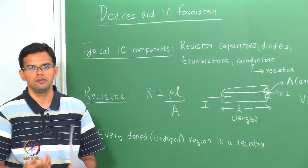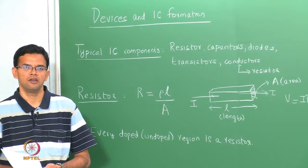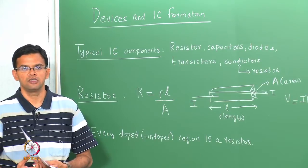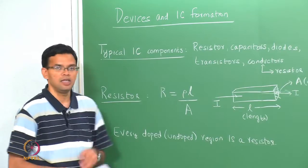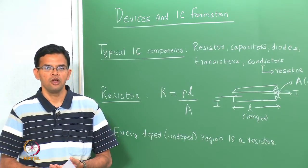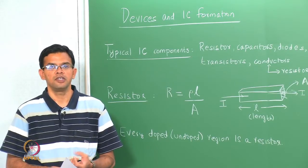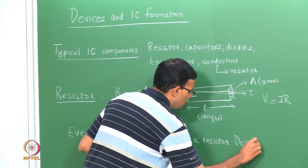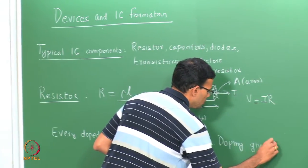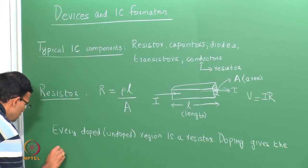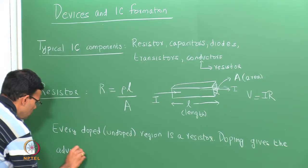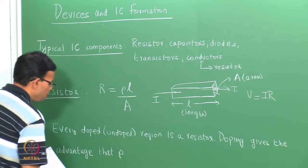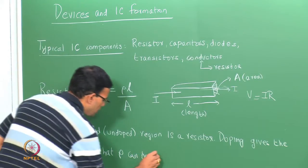If you have a piece of silicon that is typically undoped, that essentially gives you a resistor. On the other hand, if you dope it with either electrons or holes, your resistance or resistivity goes down, but it is still essentially a resistor with a different value. Doping is essentially used to control the resistivity or the resistance of that piece of material. Doping gives the advantage that rho can be controlled.